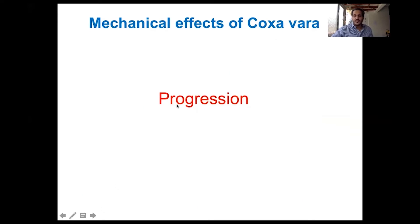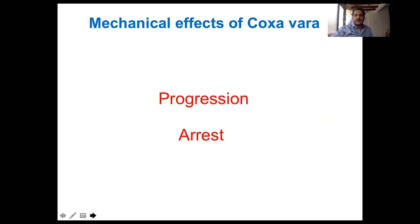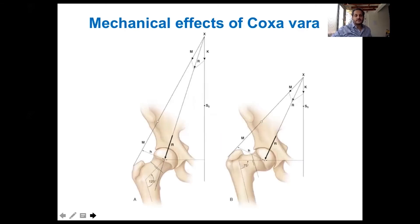The natural history is for progression of the coxa vara to occur due to the slanting of the physeal line, with some degree of inhibition and arrest occurring, leading to a shorter neck.